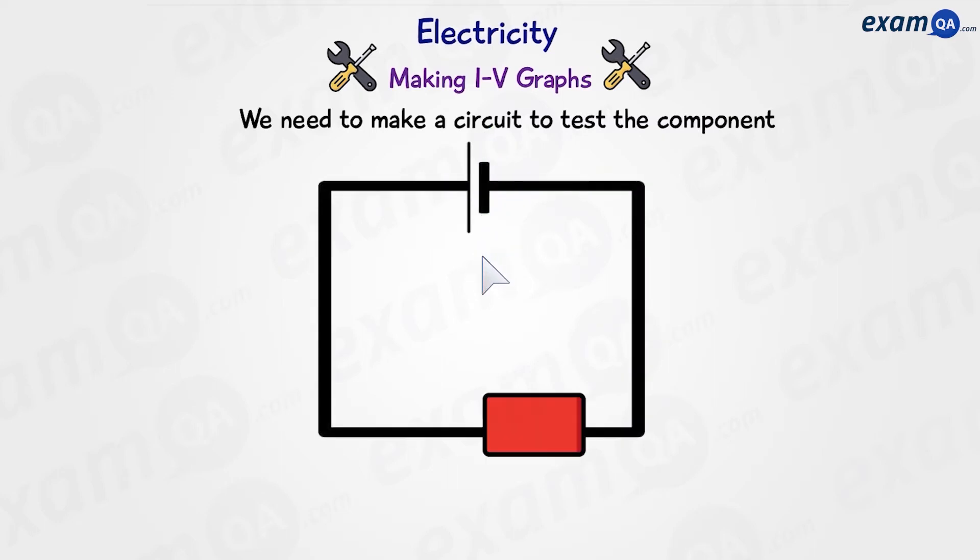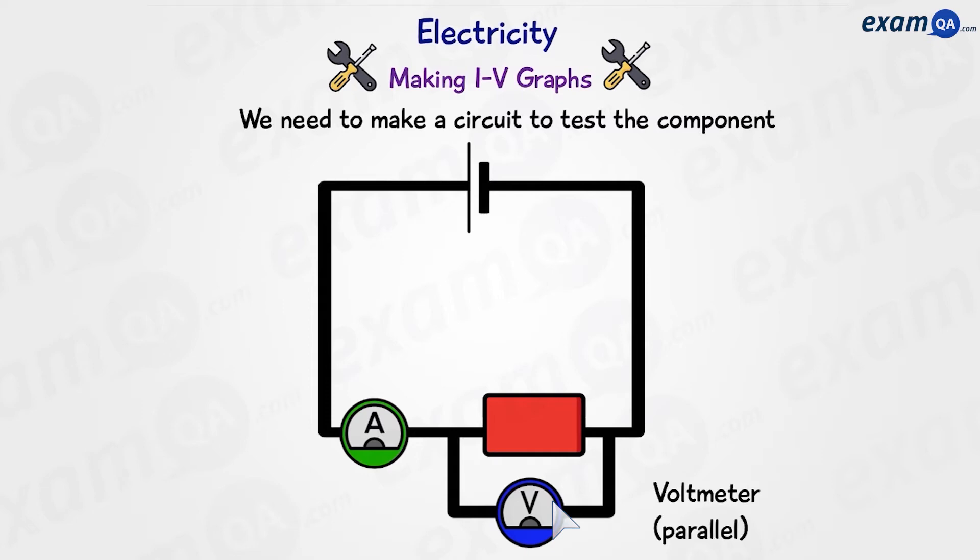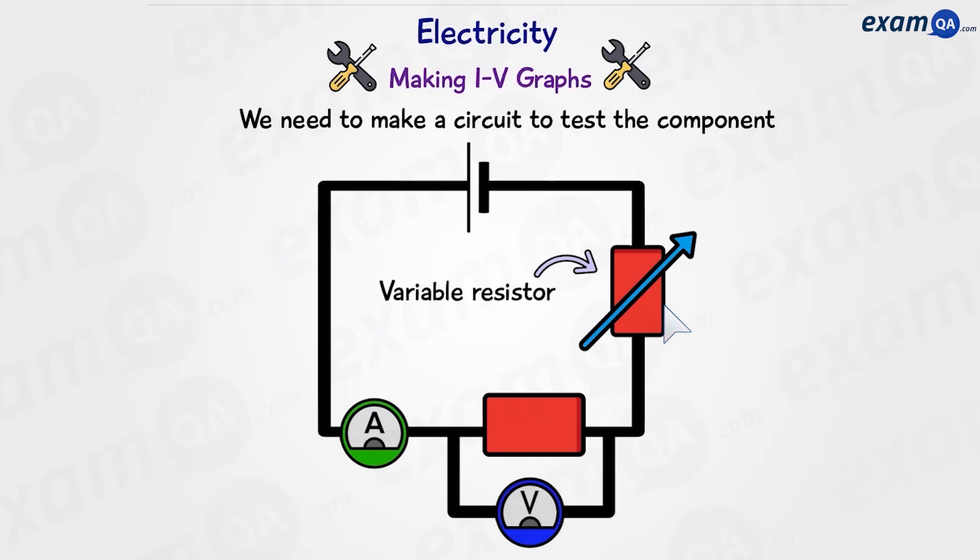Here's a circuit. We're going to put our test component here. Next to that, we'll put an ammeter in series. We also have a voltmeter around the component, and this voltmeter will be in parallel. Then we're going to put a component like this. This is called a variable resistor, and it's going to be very important as we're going to use it to change the current flowing through our test component.